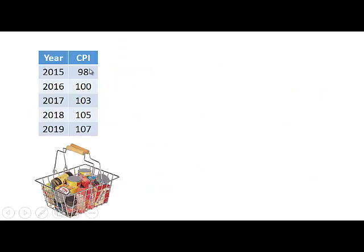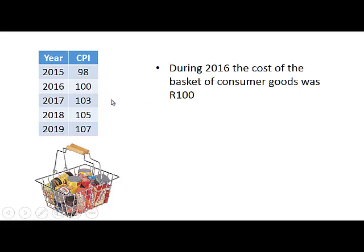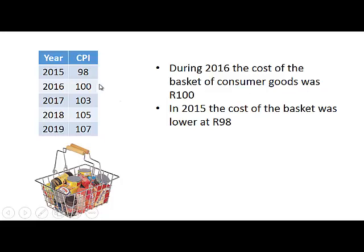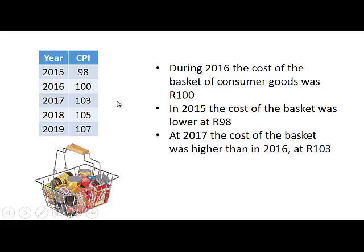This table shows imaginary data for the CPI from 2015 to 2019. The base year is 2016 because the CPI for that year is 100 — the base year will always be the year for which the CPI is 100. During 2016 the cost of the basket of consumer goods was 100 Rand. In 2015 the cost of the basket was lower at 98 Rand, and in 2017 the cost of the basket was higher at 103 Rand.